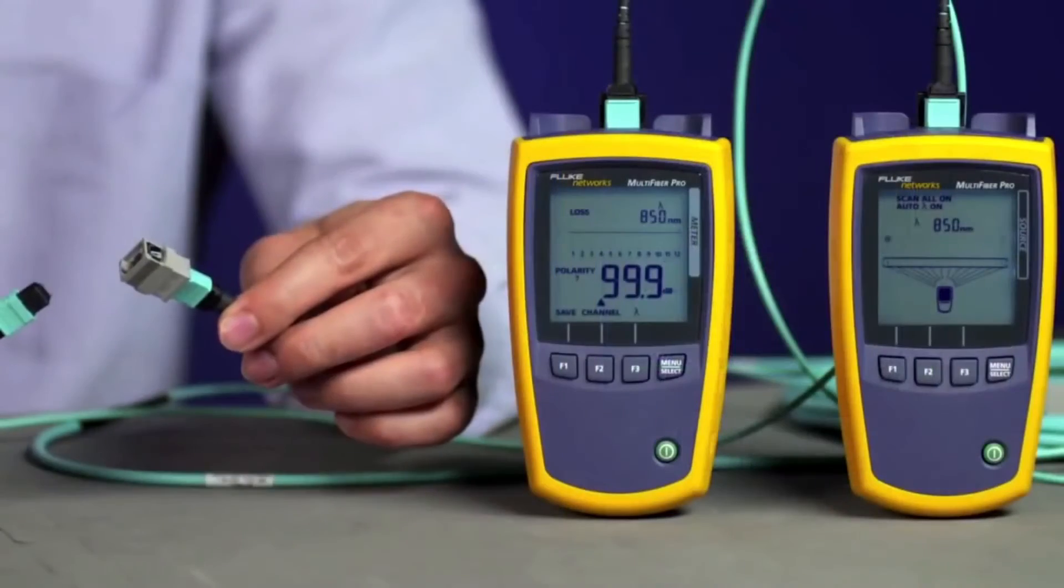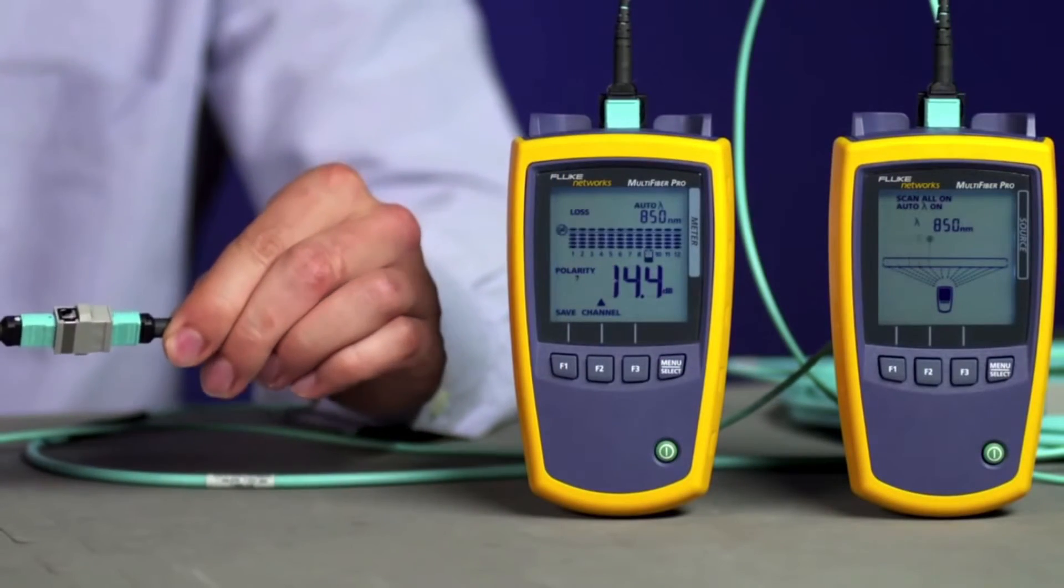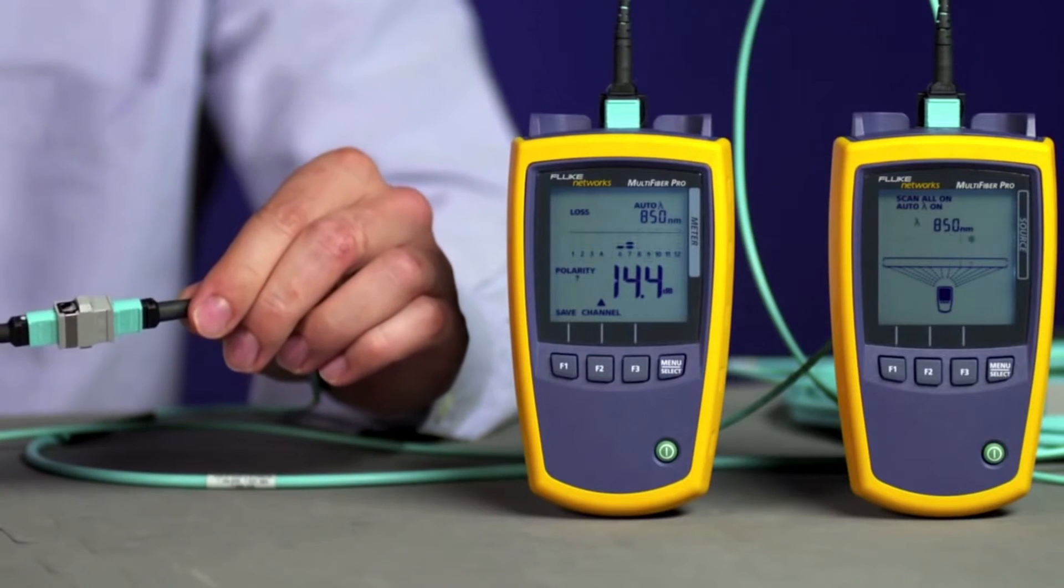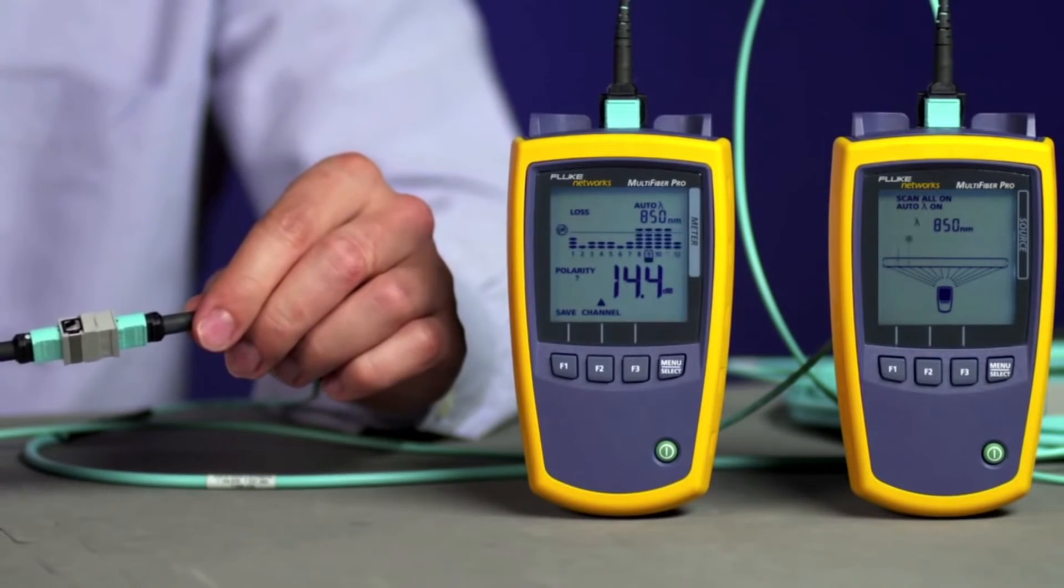Now simply connect your test cords to the MPO trunk cable and in less than 6 seconds you'll have the loss and polarity measurements for all 12 fibers.